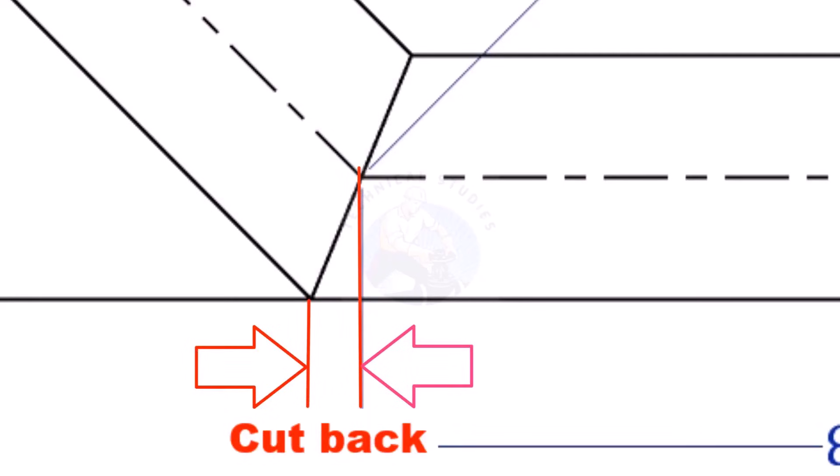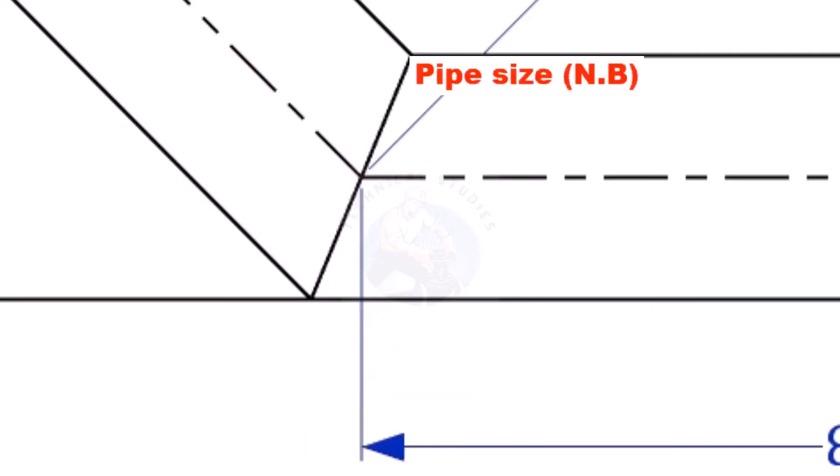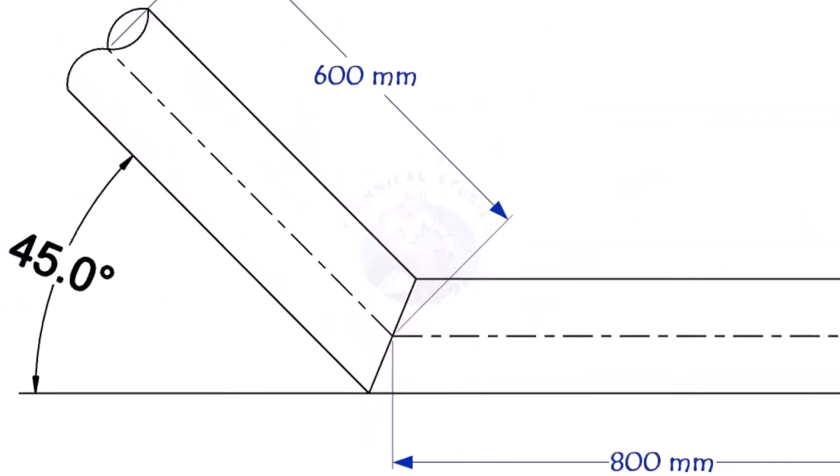To mark a miter cut, we first need to calculate the cutback of the miter. In this example, the nominal bore NB of the pipe is 6 inch and the required miter angle is 45 degrees.